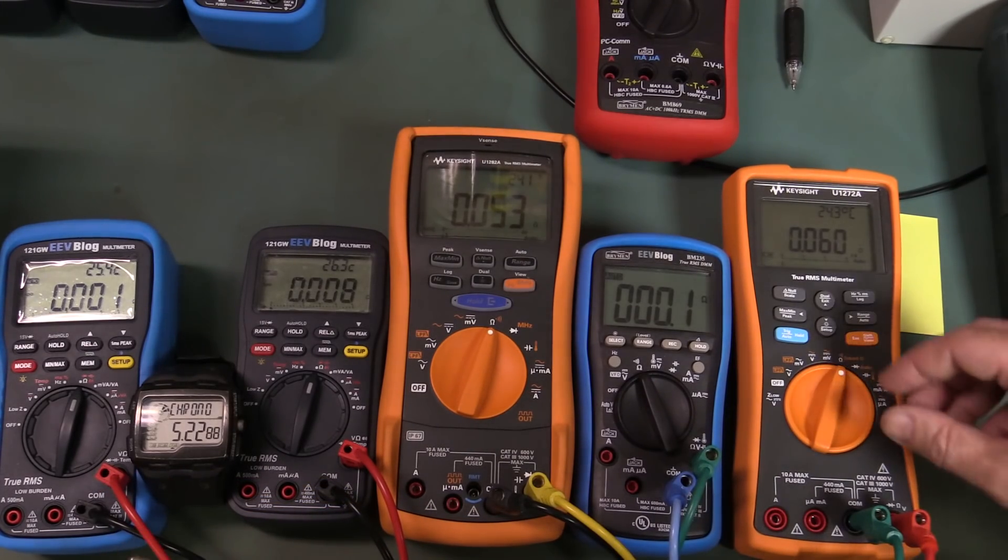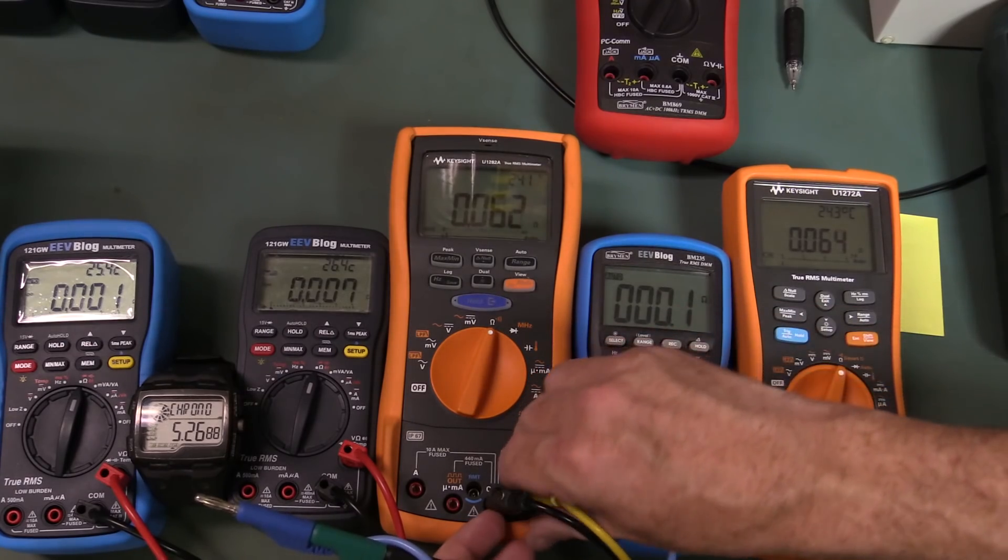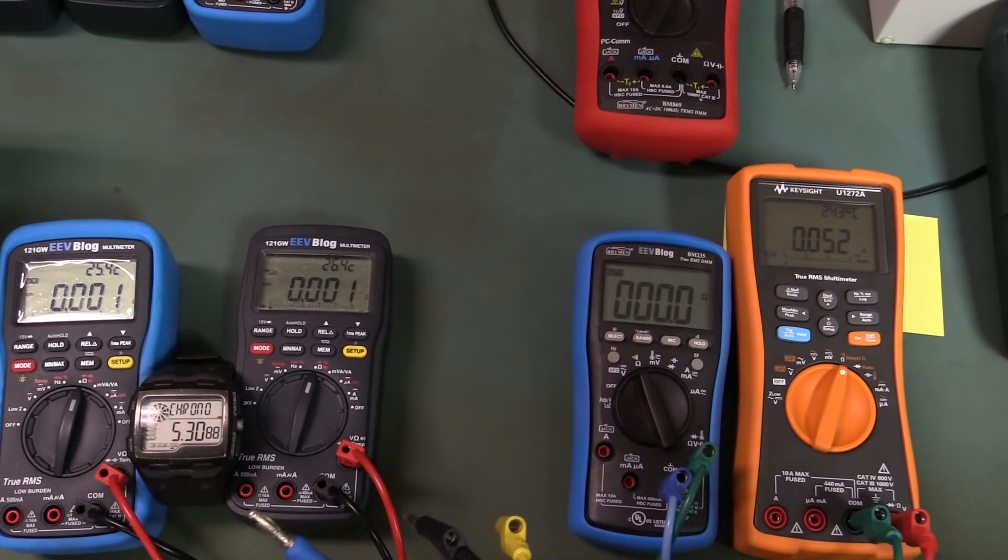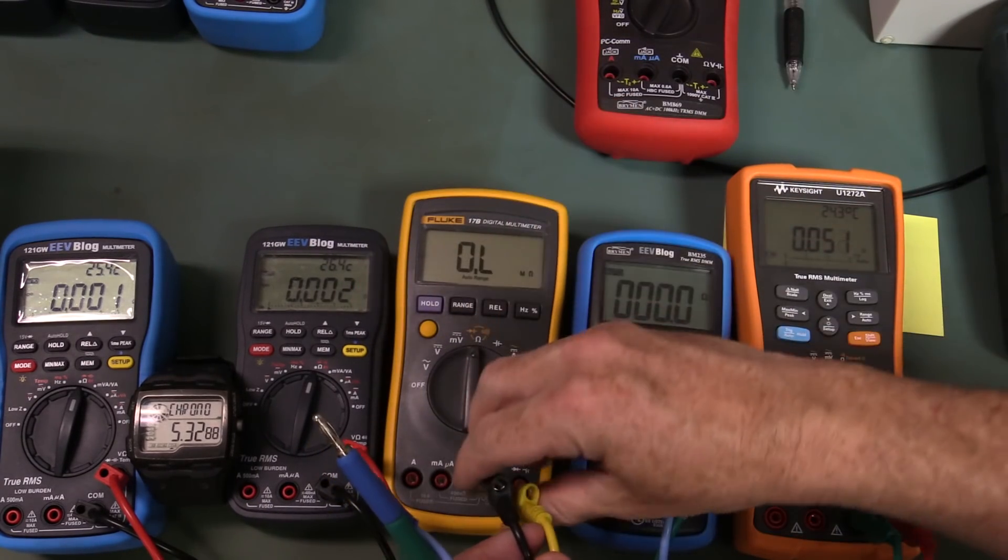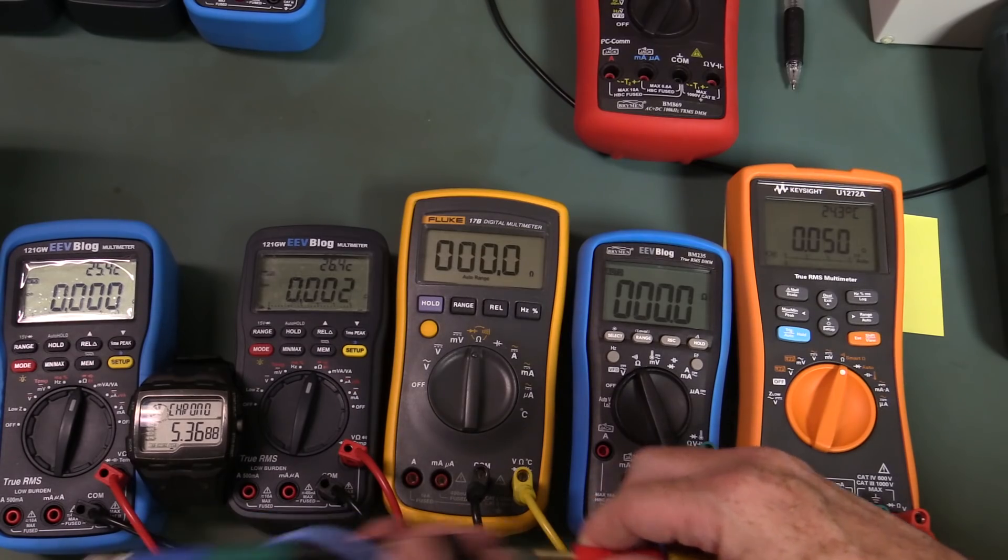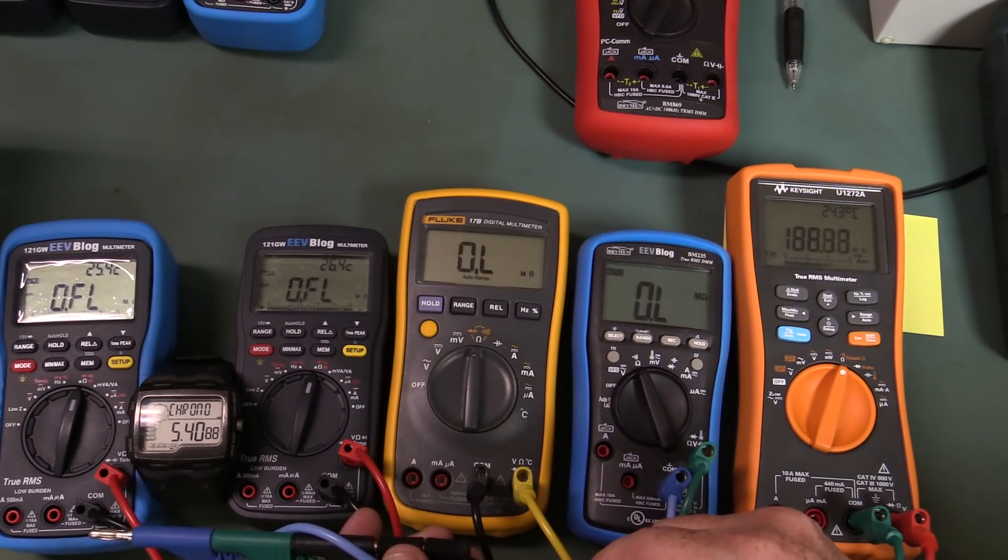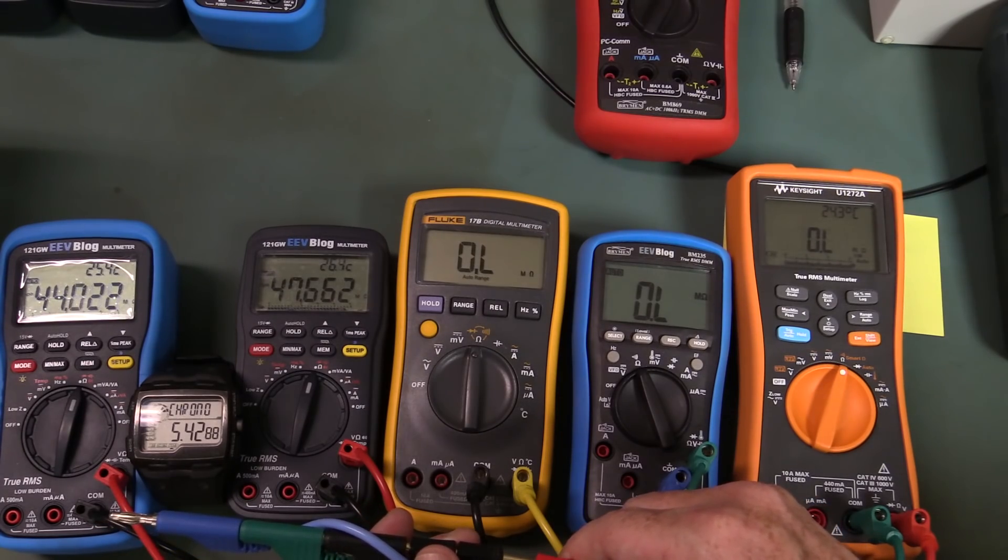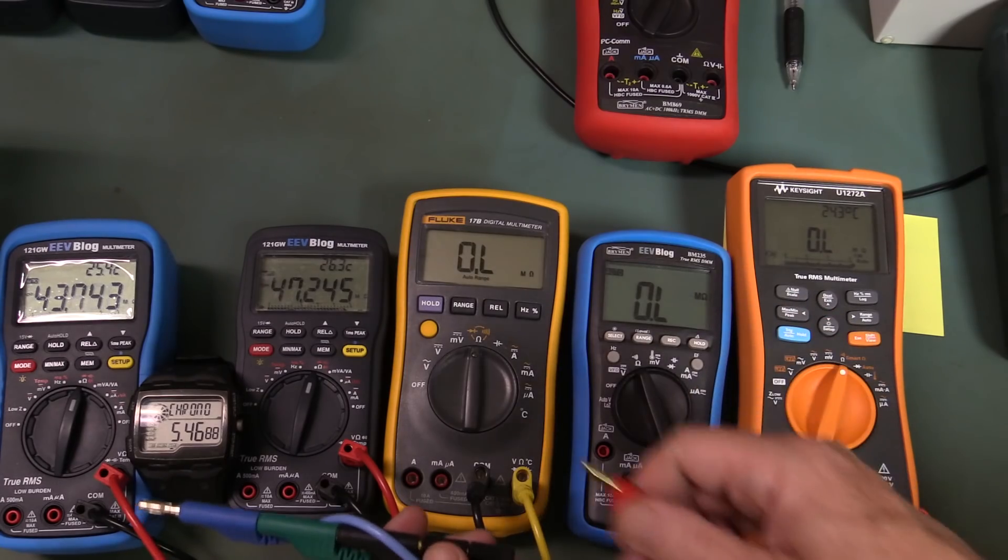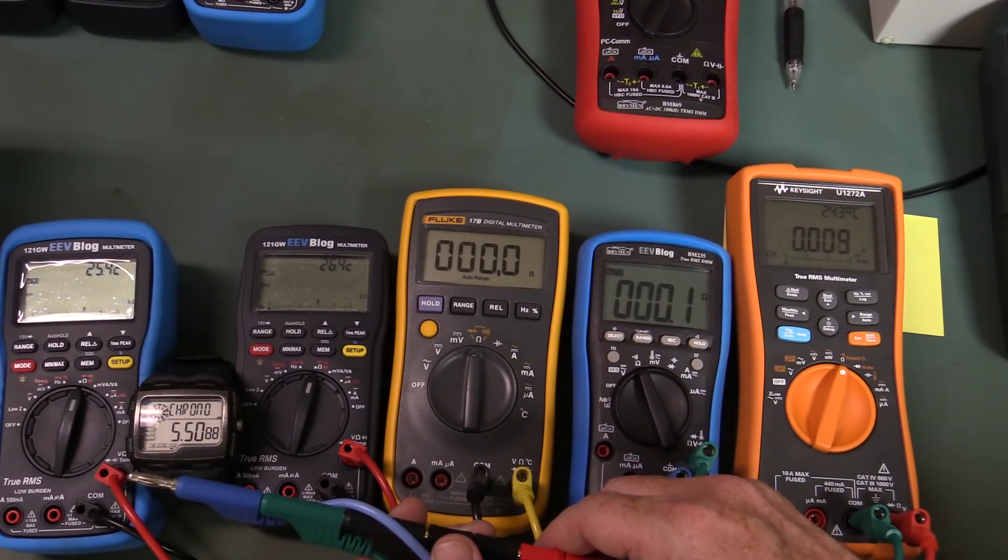And if we get some others, some other really fast ones, let's take out the 1282A and let's whack in, say, the Fluke 17B, which I believe is a fast one. Let's give that a burl. And let it go back. And see, now this is showing 47, 43, and it's just all over the shop. So there you go.